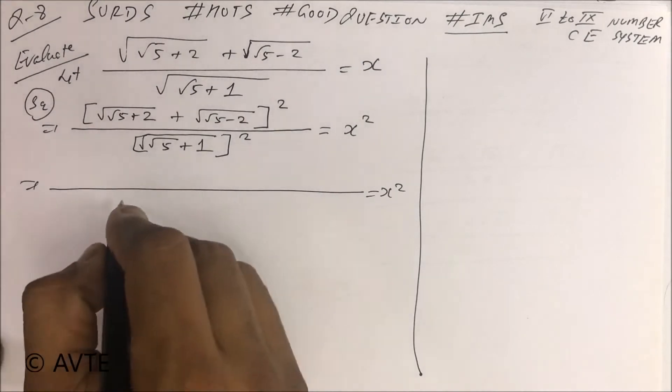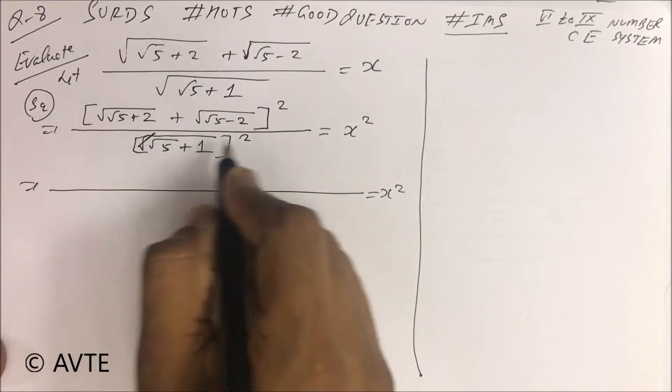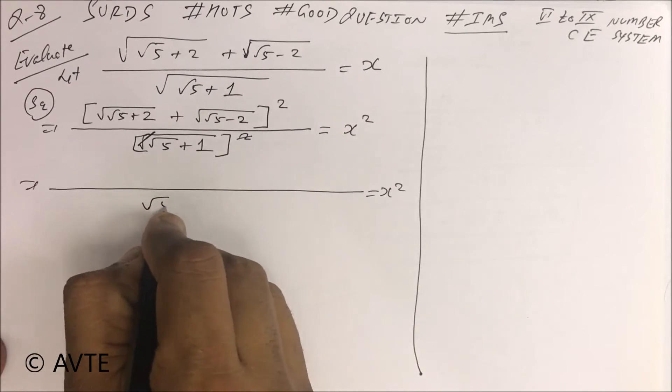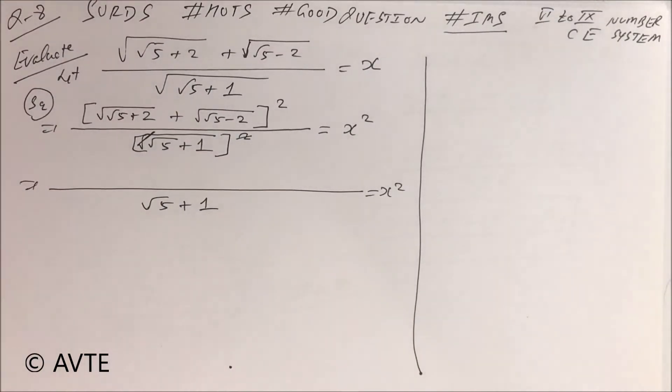Your C square is, this root will be cancelled, this root will be cancelled, so this is √5 + 1. Got it?